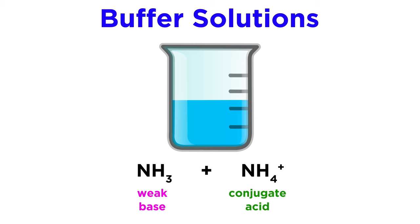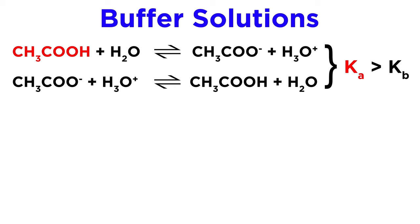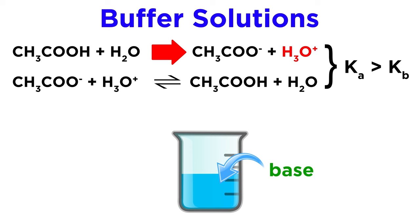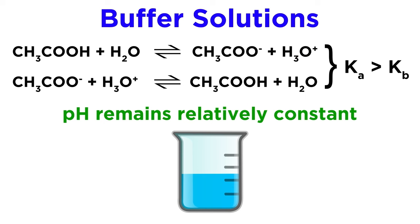Buffer solutions function as follows. The Ka of acetic acid is larger than the Kb of acetate, so the forward reaction of the top equilibrium will be more prevalent, and there will be hydronium ions in solution. Therefore, if we add a little bit of strong base, it will react with the few hydronium ions present. And since the ionization of acetic acid is in equilibrium, removing hydronium will push the equilibrium to the right and more acetic acid will ionize to restore the hydronium concentration back to its original value, as we would expect from our knowledge of Le Chatelier's principle. This means the pH will change very little or not at all.